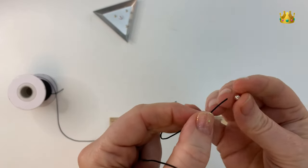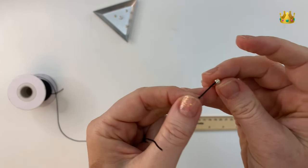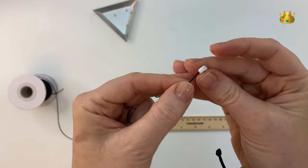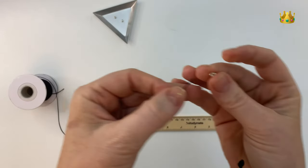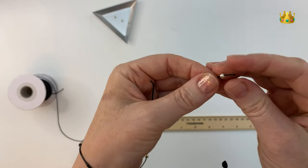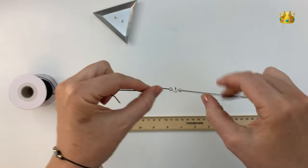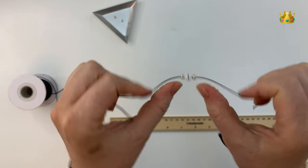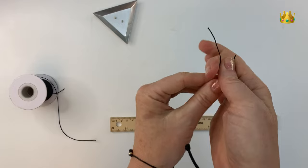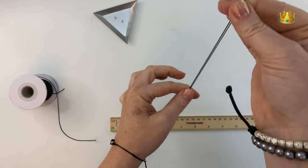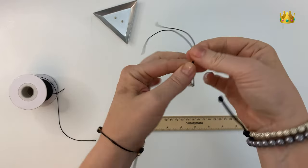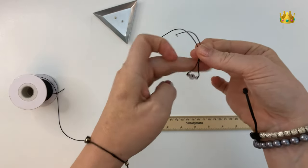Now we start by putting the beads on for the middle design. So in my case I'm putting a seed bead, then the initial bead, and then another seed bead. Now we want our beads to be sitting right in the middle of our thread. So place the ends together and follow it back down, making sure those beads are sitting in the middle.